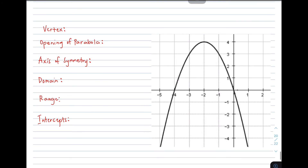Let's move on with the second example. This graph is quite different from the first example. For the vertex, we take its coordinates, which is negative 2, 4. Now for the opening of the parabola, as you can see, the opening is downward because the arrowheads point downward.